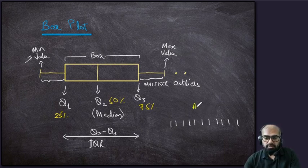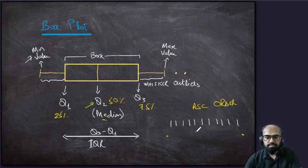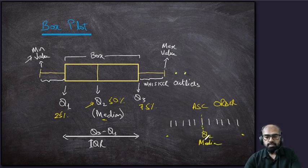Consider this set of points in ascending order — lower values on the left and higher on the right. First, let's take the median to calculate Q2, which is the median of the overall data. With five points on each side, this middle point would be termed as the median of the overall data, which is basically Q2.